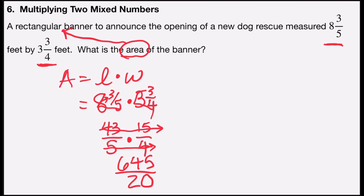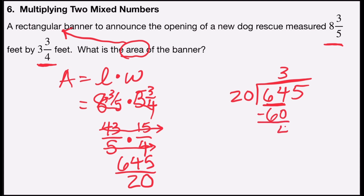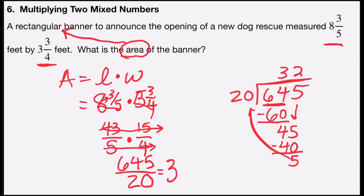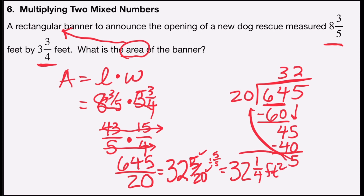Forty-three times fifteen is 645, and five times four is twenty, giving 645 over 20. Converting to a mixed number: twenty goes into 645 — twenty goes into 64 three times (three times twenty is sixty, remainder four), drop the five to get 45, twenty goes into 45 twice (two times twenty is forty, remainder five). So 645 over 20 is 32 and 5 over 20. Reducing by a factor of five gives 32 and one-fourth square feet for the area of the banner.